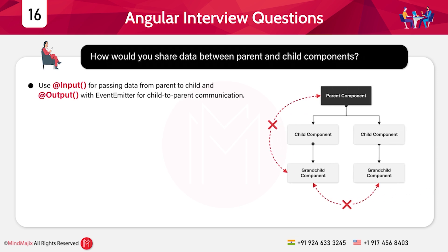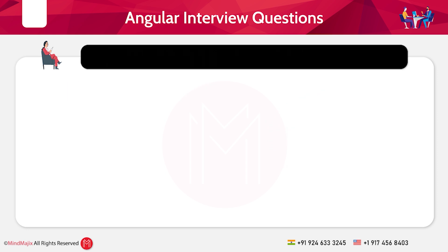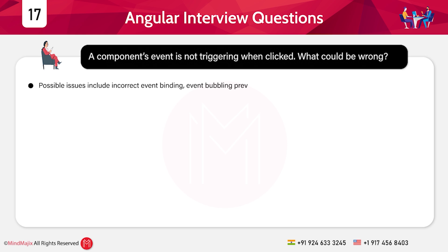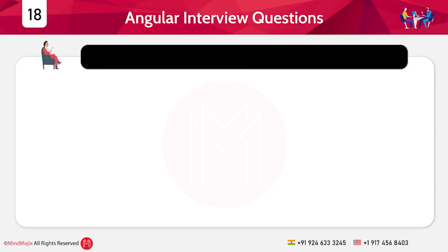The seventeenth question: A component's event is not triggering when clicked — what could be wrong? Possible issues include incorrect event binding, event bubbling prevention, or missing function implementation in the component class.